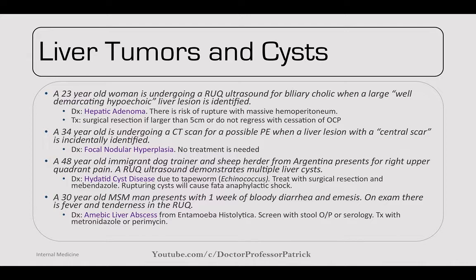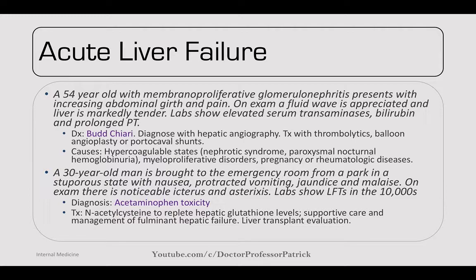Acute liver failure — a 54-year-old with membranoproliferative glomerulonephritis presents with increasing abdominal girth and pain. Exam: fluid wave, markedly tender liver. Labs: elevated transaminases, bilirubin, and prolonged PT. This is Budd-Chiari syndrome — rapidly progressing hepatic failure. Diagnose with angiography to see the clot in the portal system. Treatment: thrombolytics, balloon angioplasty, and portal caval shunt. Most common causes: hypercoagulable states (nephrotic syndrome — loses antithrombin 3), PNH, myeloproliferative disorders, pregnancy, and rheumatologic diseases.